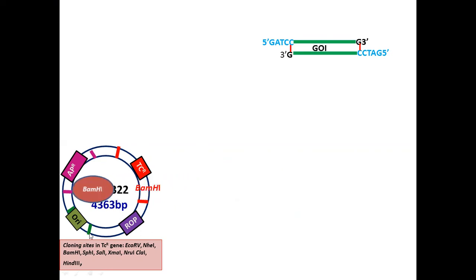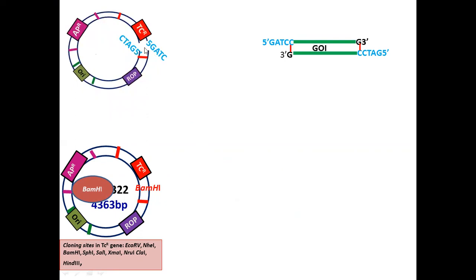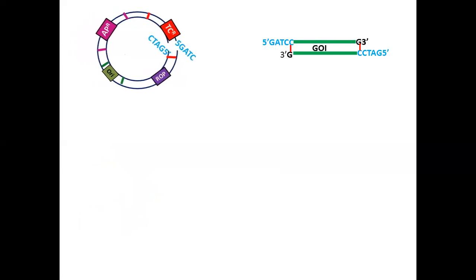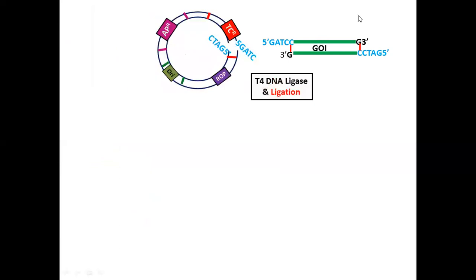After digestion, the vector is linearized with cohesive ends. Both vector and insert now have compatible cohesive ends. We ligate them in a 3:1 insert-to-vector ratio using T4 DNA ligase. The ligation reaction is carried out at 16°C or 4°C overnight.